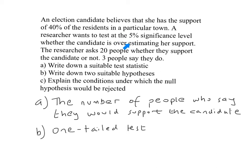A two-tailed test would be used if the question said a researcher wants to test at the 5% significance level whether the candidate is correct or not. If it's about whether she is correct or not, the actual number voting for her could be more than 40% or less than 40%. But what we're looking at here is just whether it's less than 40% — whether the candidate is overestimating her support. With 3 out of 20, which is 15%, it looks like the number is an underestimate. That's why it's a one-tailed test, and you can tell that from the wording of the question.